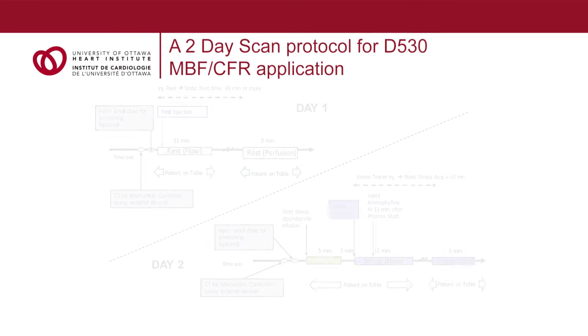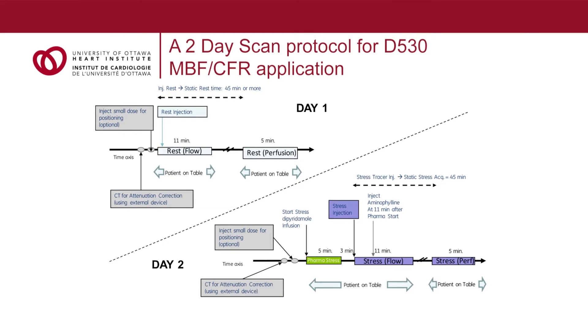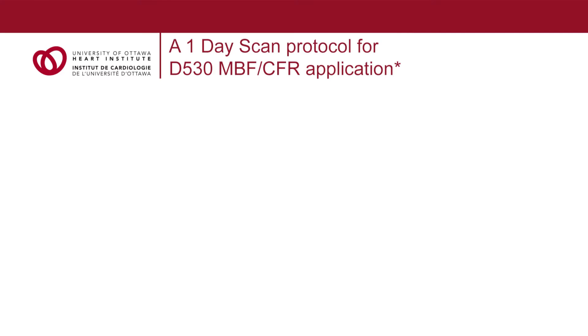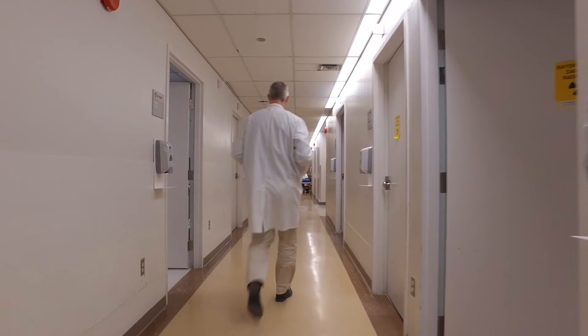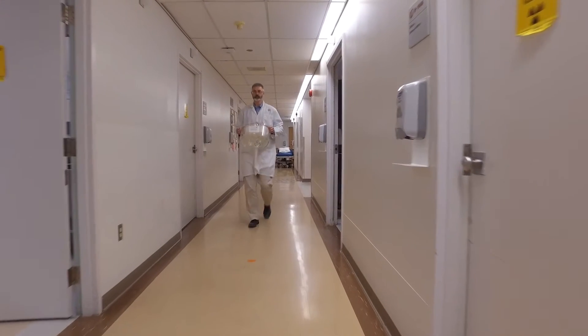Both one-day and two-day protocols are possible for myocardial perfusion imaging with SPECT. With the two-day protocol, the advantage is that the injections are done on separate days so the activity is completely cleared from the patient before the second injection. With the one-day protocol, the advantage is greater convenience for the patient — a single visit to the hospital — and it is possible through measurements prior to the second injection to perform a mathematical correction for the residual activity.